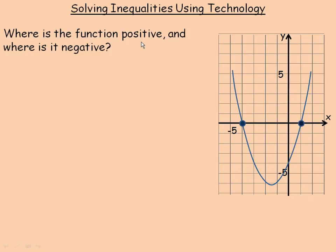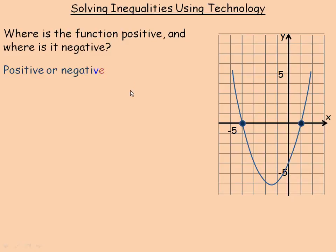There's a question at the top of this page referring to the graph, and the question asks where is the function positive and where is it negative. Positive and negative refers to the function values or y values, and the answer refers to an interval for x.